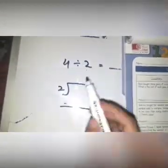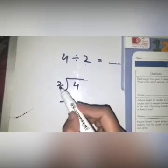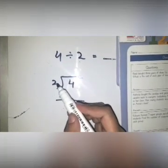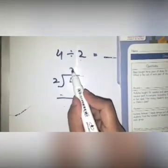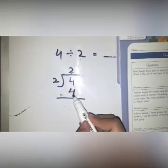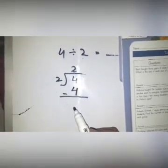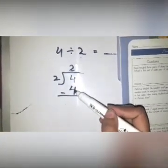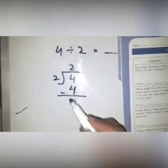2 times 2 is 4, so we will write 4 here and the minus sign here. 4 minus 4 equals 0. This means you have the answer 2, so you will write 2 here and the same 2 in your book.